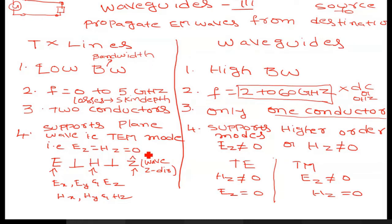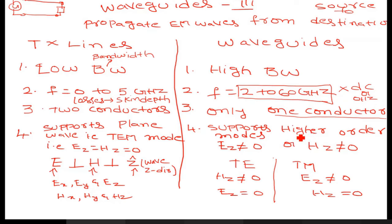So the EZ and HZ components are zero, and all three — electric field, magnetic field, and the direction of wave propagation — are perpendicular to each other. Transmission lines support only TEM mode; any other mode is not supported. But in the case of waveguides, they support higher order modes, where at least one of EZ or HZ must be non-zero.